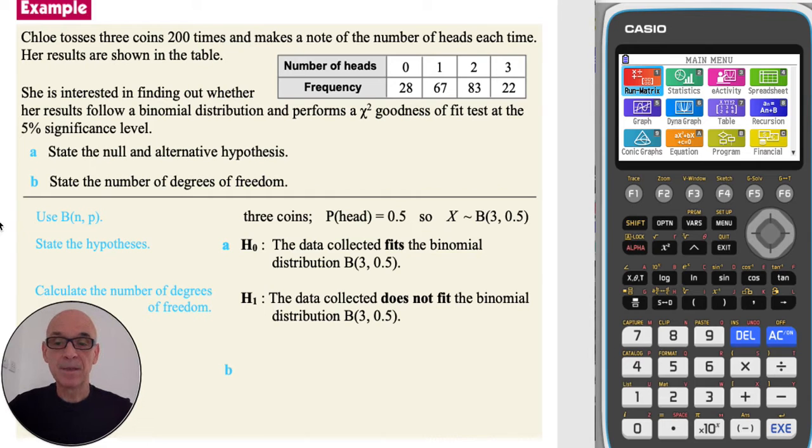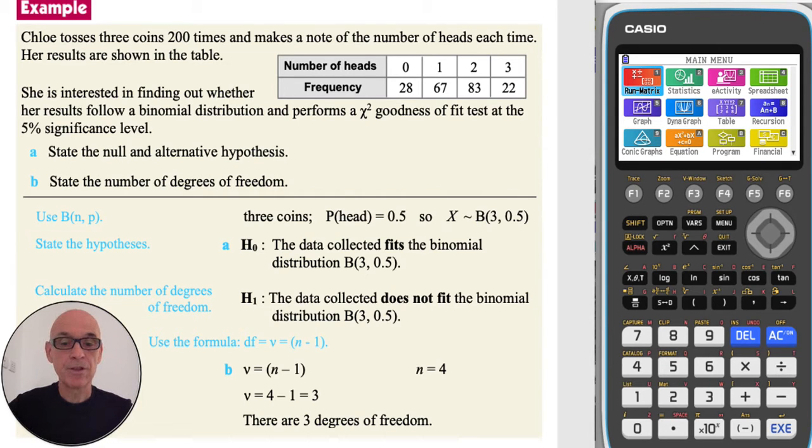In part B, to state the number of degrees of freedom, we can use the formula nu equals n minus 1, where n is the number of categories. In this case, the number of heads is 4. So 4 minus 1 is equal to 3. So there are three degrees of freedom.